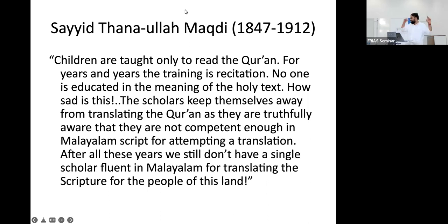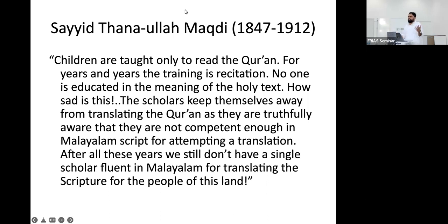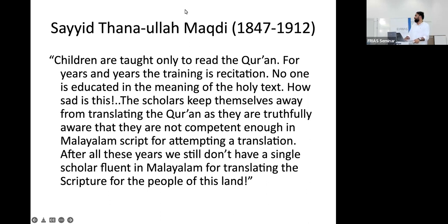By 'the people of this land' he meant not only Muslims — he argued very strongly that you should give the Quran to Christians and to Hindus; da'wa is your fundamental duty and you cannot get away from this. He was heavily critiqued for this. It is said in his autobiography that he attempted a Quran translation but lost the manuscript somehow; it was not published, and he died in 1912.